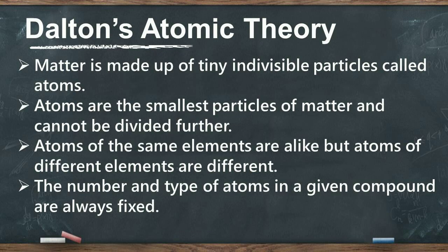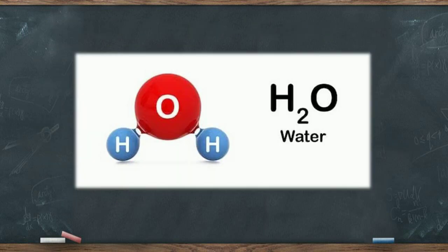The number and type of atoms in a given compound are always fixed. For example, water is a compound which is always made up of two types of atoms, hydrogen and oxygen, and always two atoms of hydrogen and one atom of oxygen combine to form water.